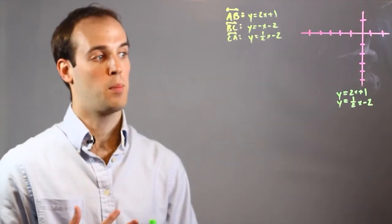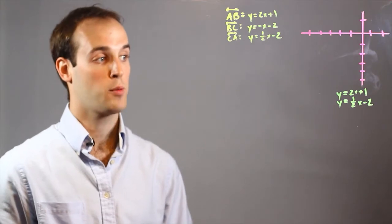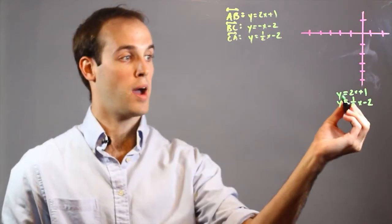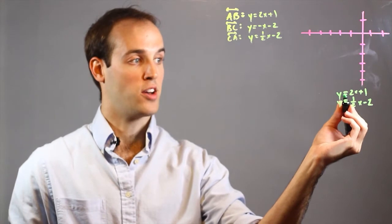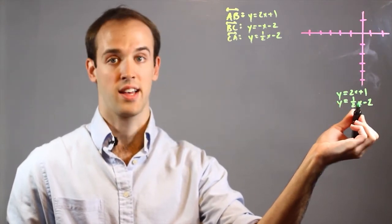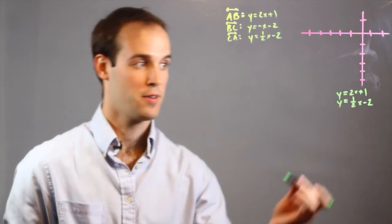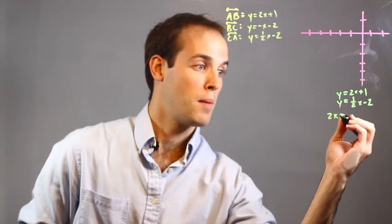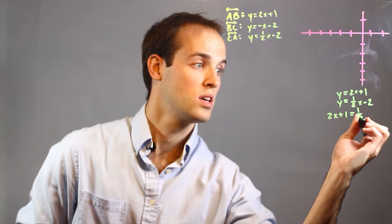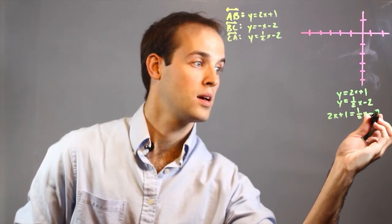Now there are a couple of different ways that you can solve for a system of equations. I'm going to use the substitution method, which you get by knowing that both y values equal two different things, therefore those two different things must equal each other. So I will set up my equation just like this: 2x plus 1 equals one half x minus 2.